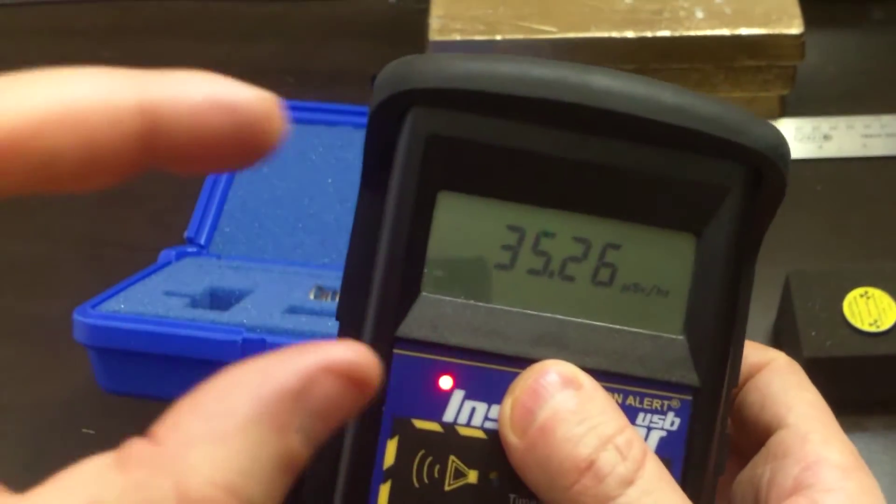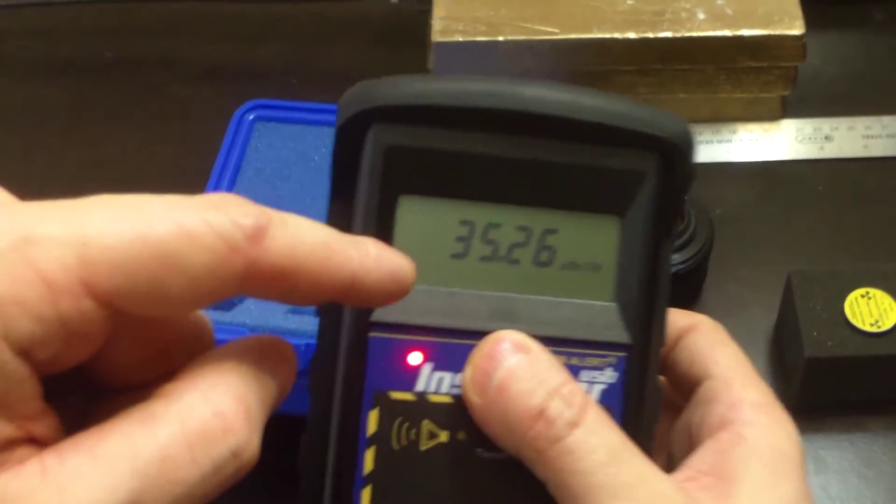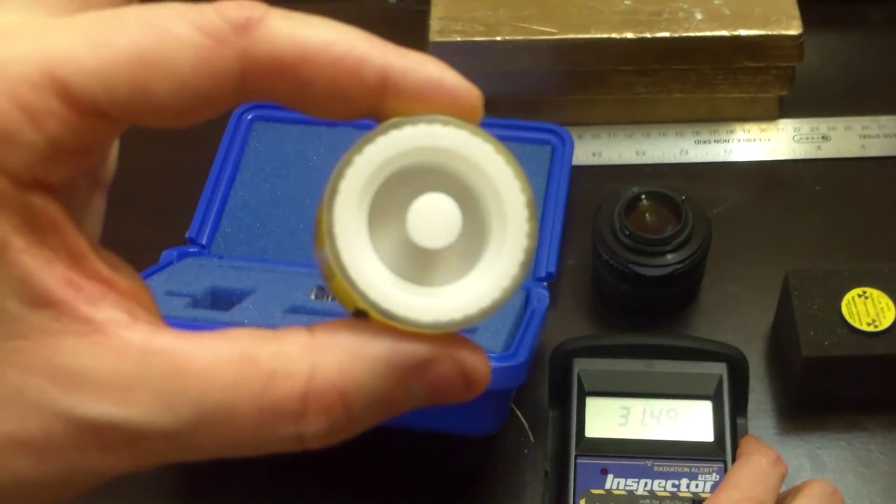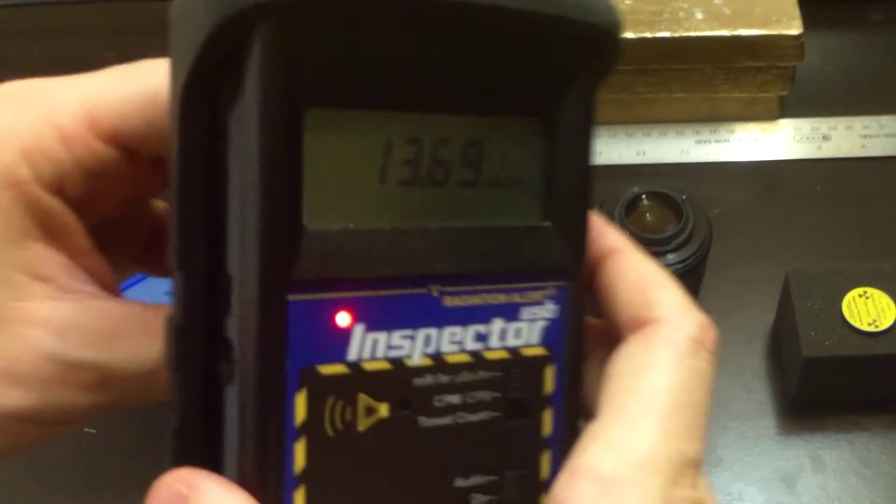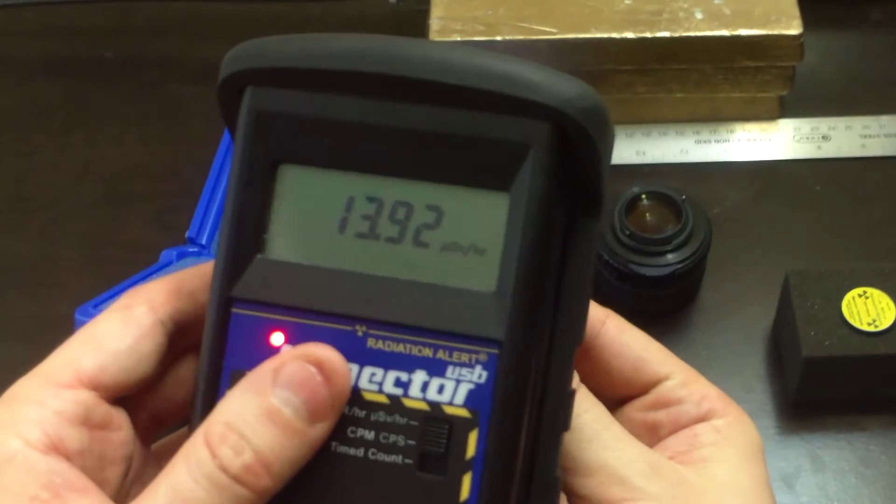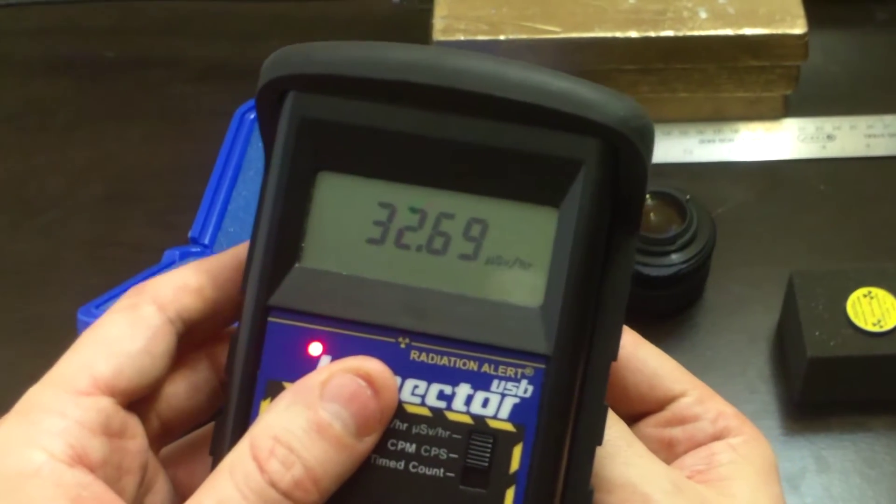So that means that my fingers, right where I'm holding it, would be receiving around 35 to 36 microsieverts in a given full entire hour. That means I have to hold it like this in my hand for an hour. And you'll notice, by the way, let me turn this so you can see it.